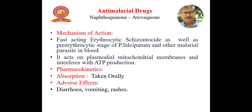The next drug is atovaquone. Atovaquone is a fast-acting erythrocytic schizonticide, as well as active against the pre-erythrocytic stage of P. falciparum and other malarial parasites in blood. It acts on plasmodial mitochondrial membranes and interferes with ATP production. The drug is taken orally. Adverse effects are diarrhea, vomiting, and rashes.